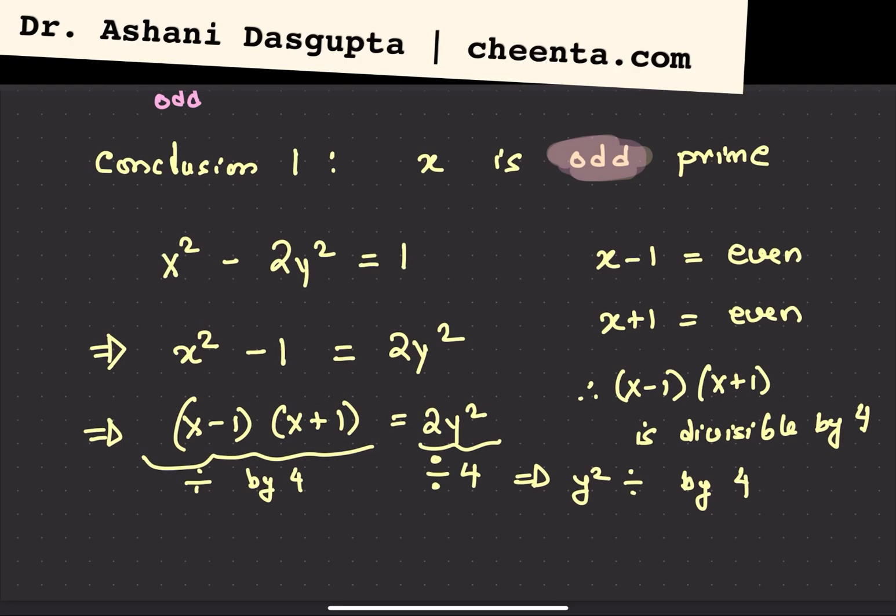Look, the only way y square can be divisible by 4 if y is even prime, right? That is, y equals to 2. The only prime number that's even is 2. So that brings us to our conclusion 2: y is an even prime or y is equal to 2.